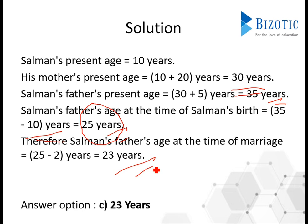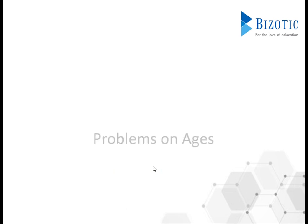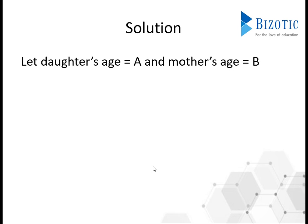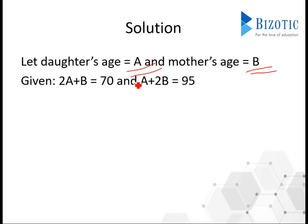Last problem on ages: if 2 times the daughter's age is added to the mother's age, the total is 70. If 2 times the mother's age is added to the daughter's age, the total is 95. What is the mother's age? Let daughter's age = a and mother's age = b. The two equations are: 2a + b = 70, and a + 2b = 95.